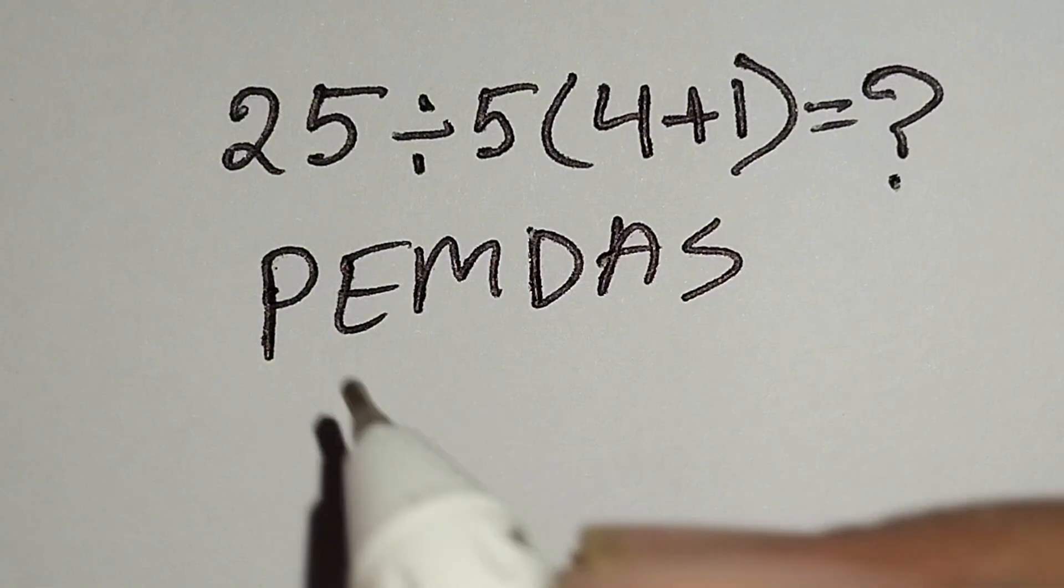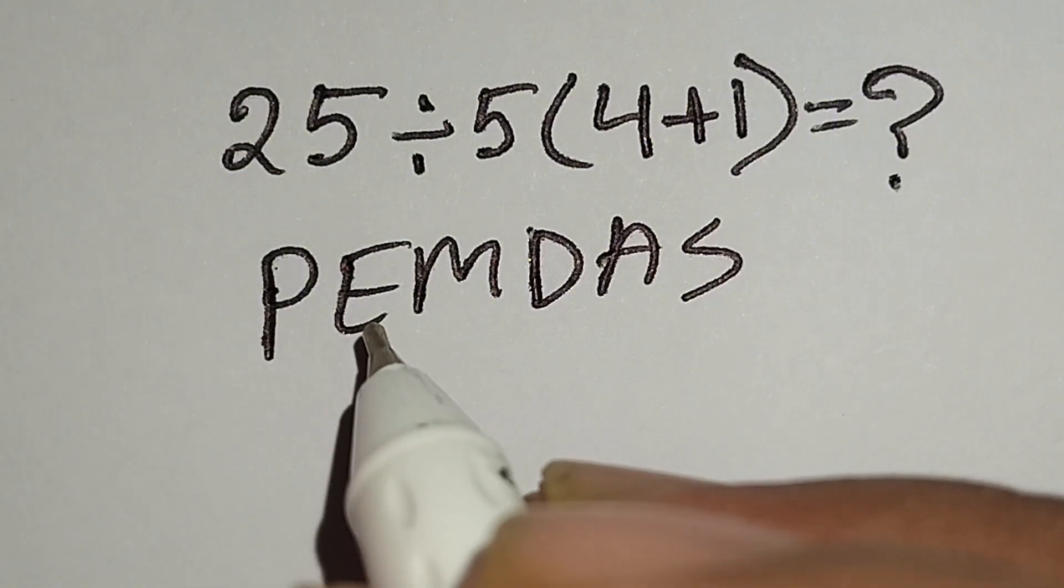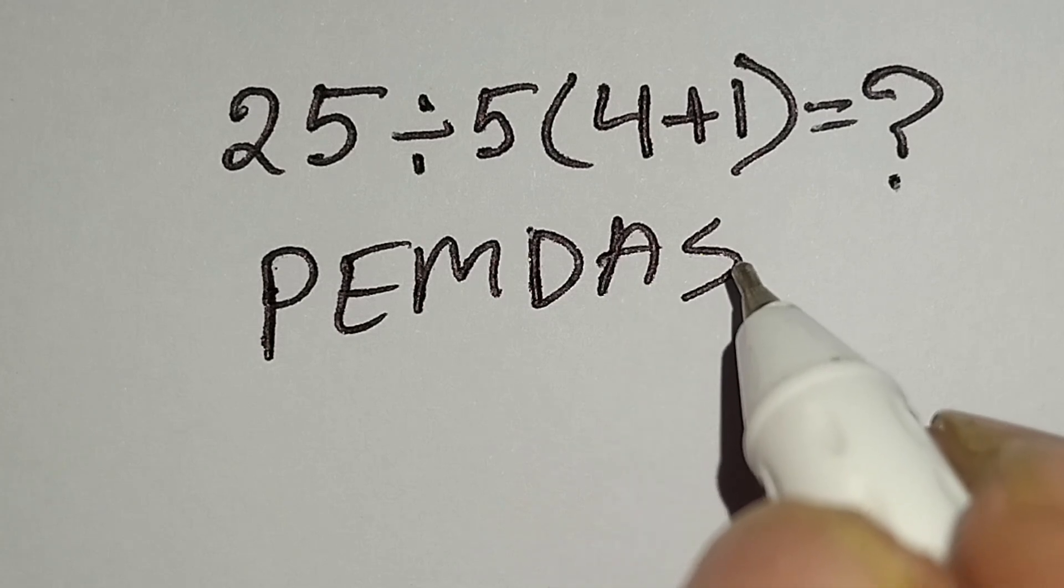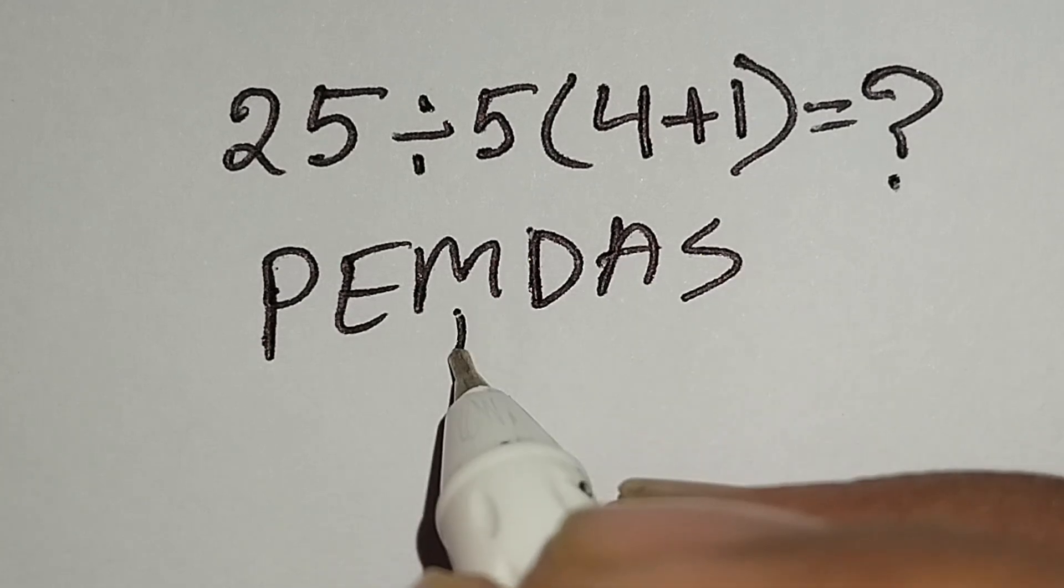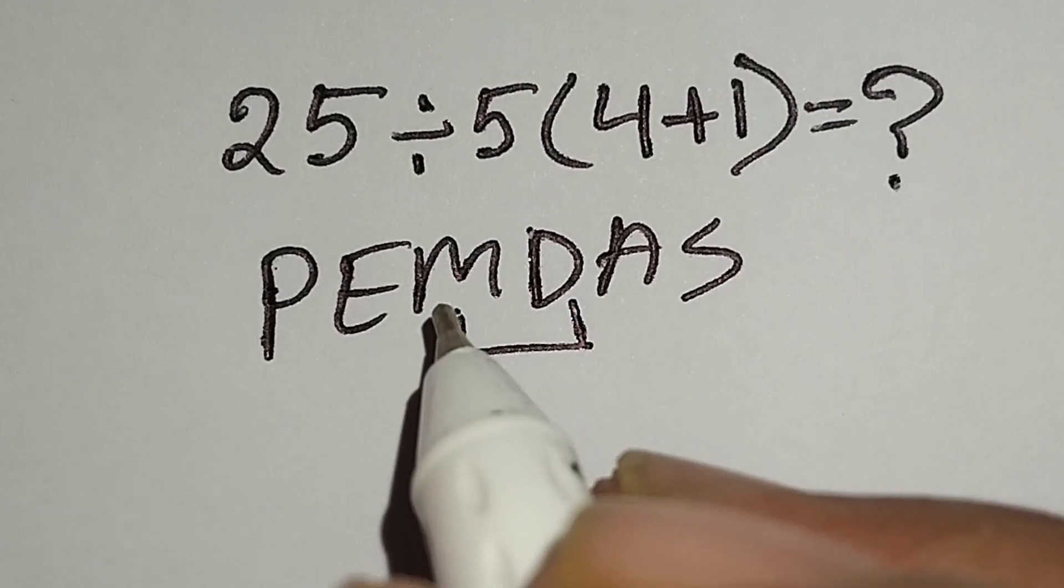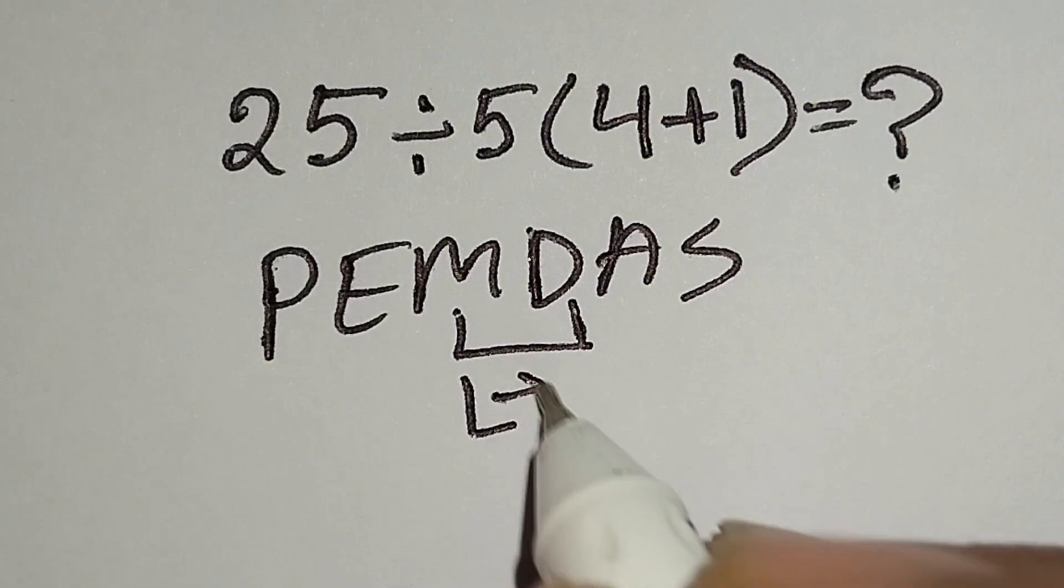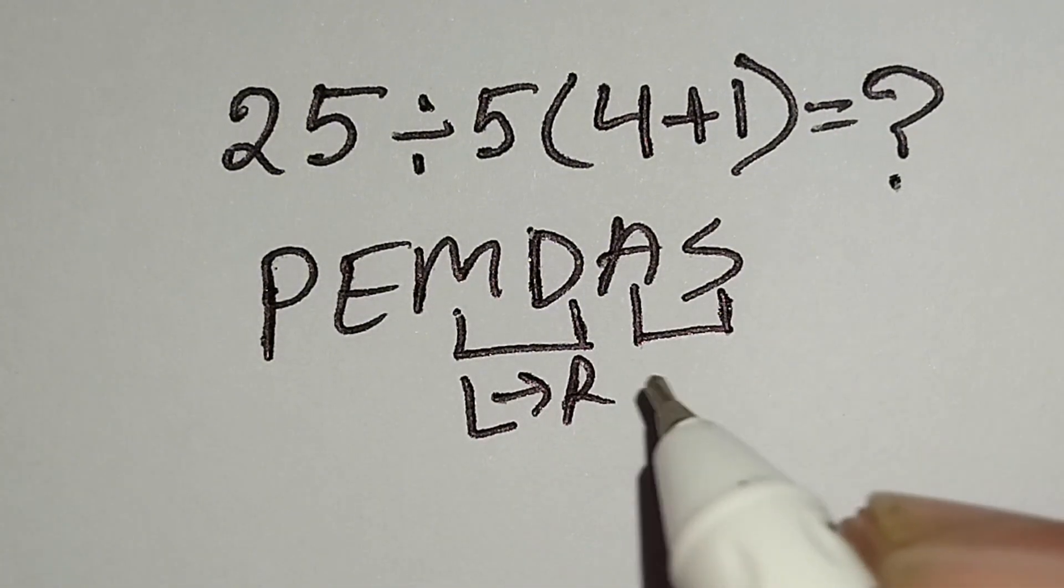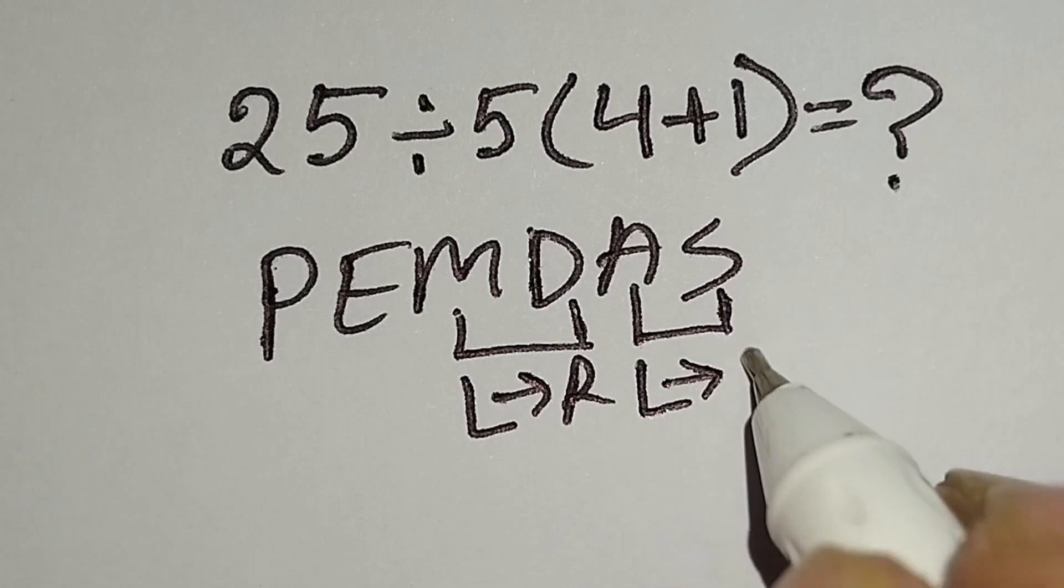According to PEMDAS rule, at first we have to work with parenthesis, then exponent, then multiplication or division, then addition or subtraction. Remember multiplication and division have same priority, for this we have to work left to right. And addition and subtraction have same priority, for this we have to work left to right also.